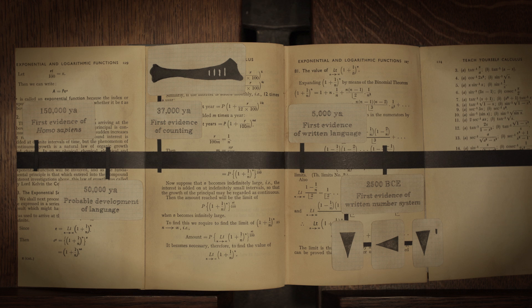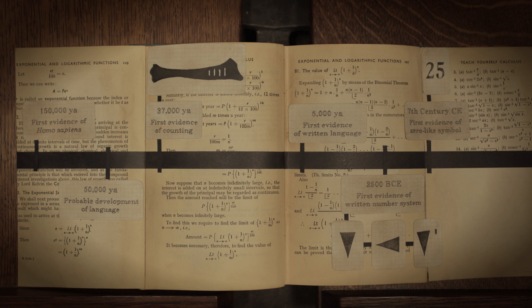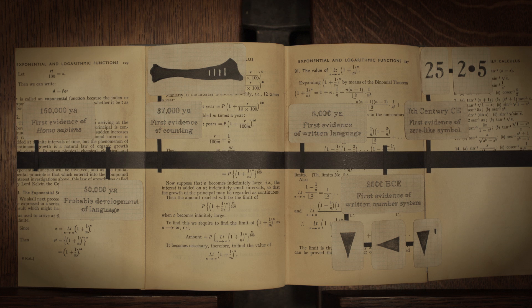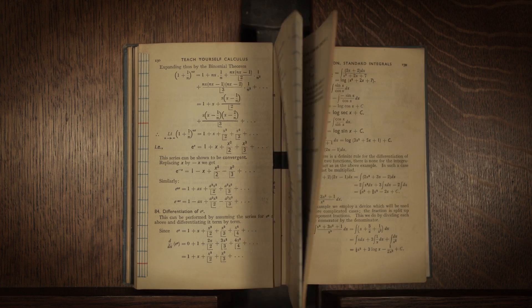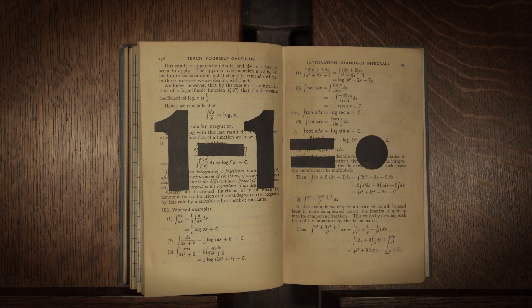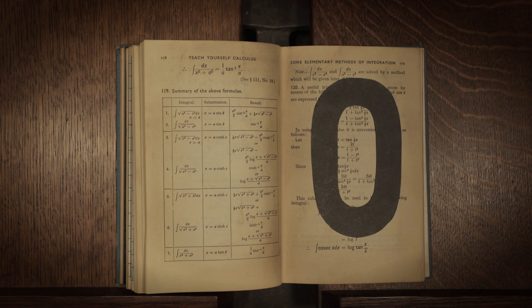Fast forward another three millennia to 7th century India, where mathematicians used a single dot to distinguish between numbers like 25, 205, and 250. Employed as both a placeholder and a number, this all-powerful dot eventually morphed into the symbol we know today.